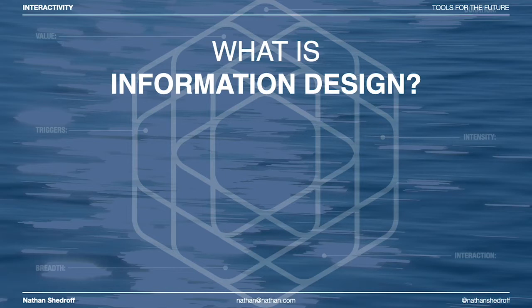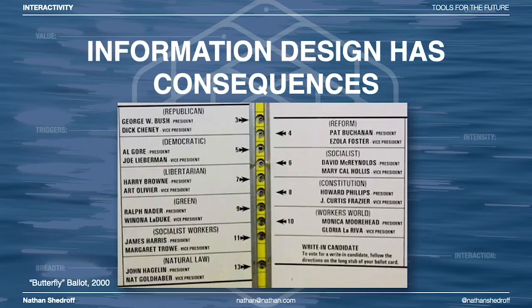Even experiences that can be configured in different ways need to start in one state or another. This is called a mental model, and what we design builds a mental model for our audiences. Consider the example of bad information design: when information design isn't considered well, it can have monumental effects on the outcomes of experiences.